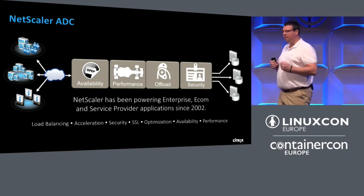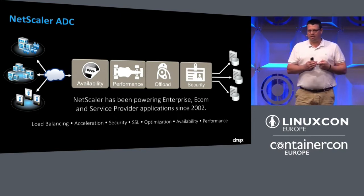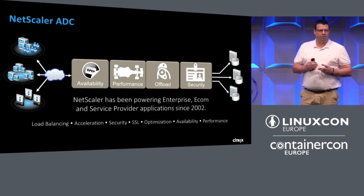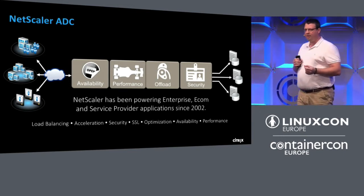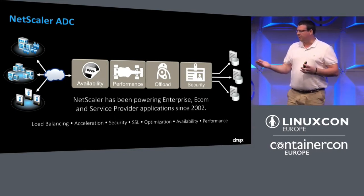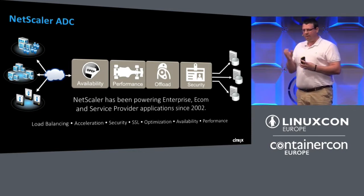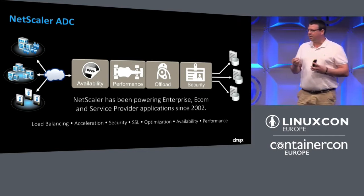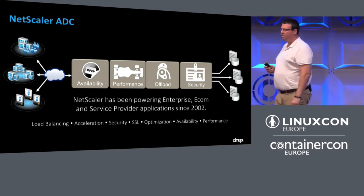The next piece is performance — how do we make that end user experience that much better? We can do this by integrating caching into the device, by compressing data to make the payload smaller. We also have technology we call front end optimization, where we actually read the code on the fly. We see an HTML page being delivered, look at it and say the browser doesn't need all that white space, so we remove it. We see there's some JavaScript being called, so we pull it in, inline it into that HTML, and send it out — fewer objects to download, and the user gets that data much faster.